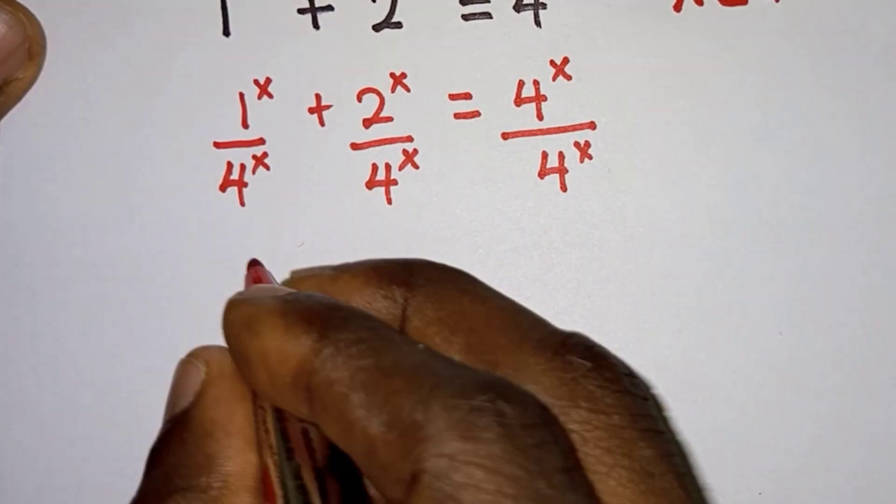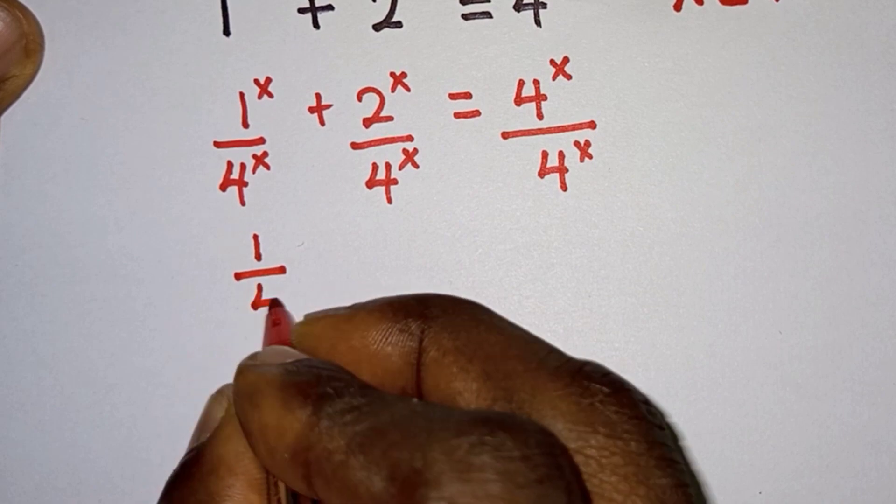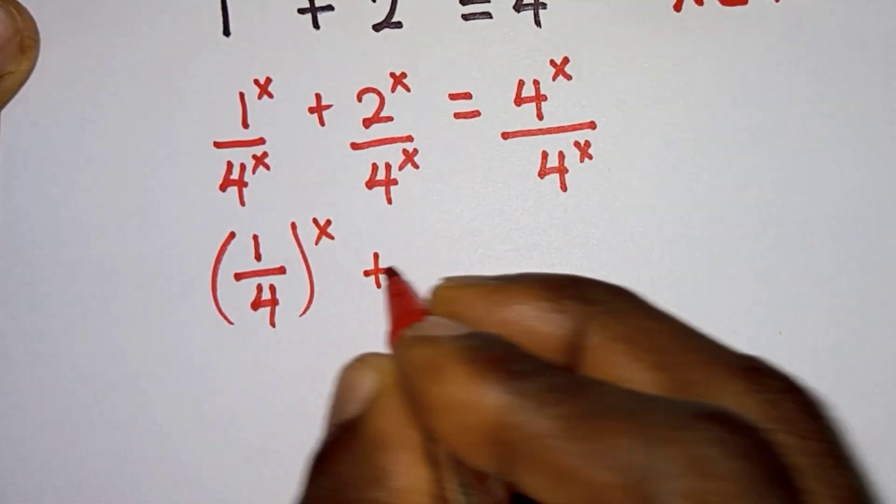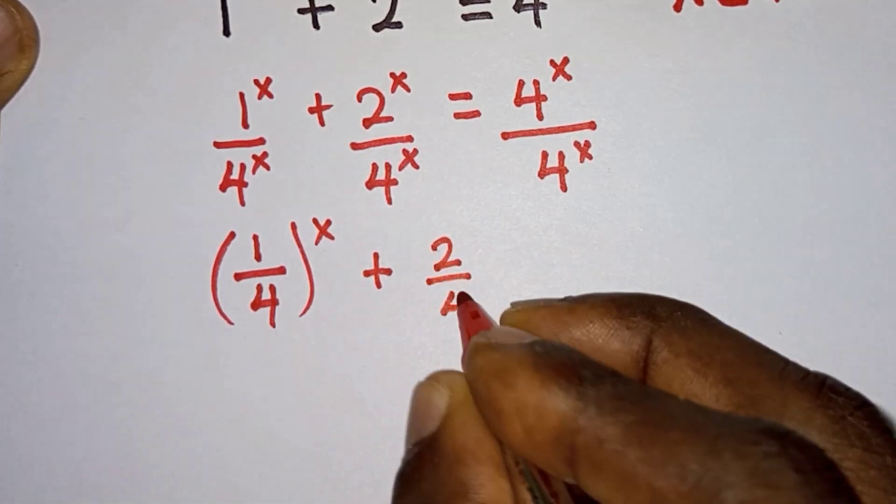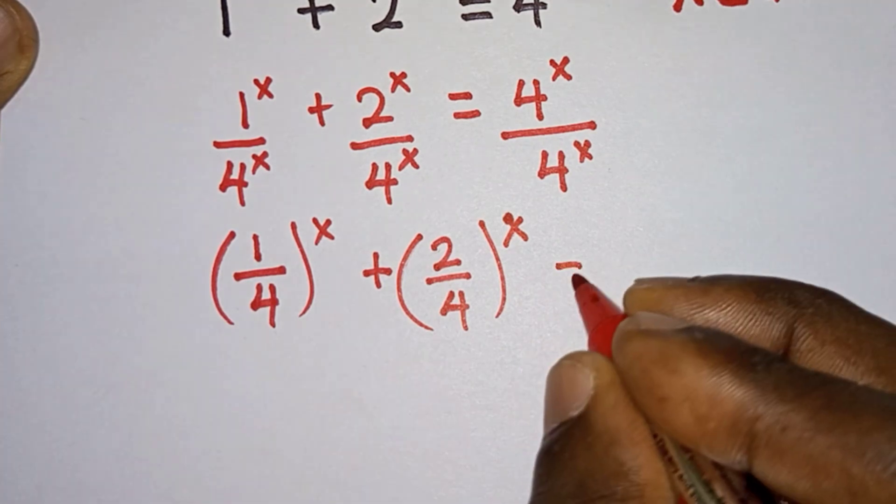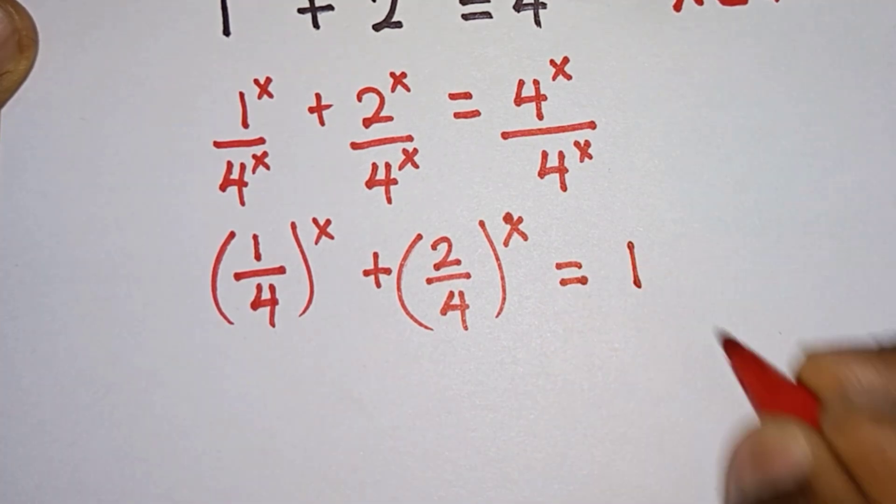From here we will have (1^x)/(4^x) plus (2^x)/(4^x), and on the right hand side of the equation we have 1.